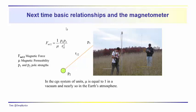And, the next time we're going to talk about some basic relationships. What is the magnetic force. We'll talk a little bit about the proton precession magnetometer. And, we'll also note that the magnetic permeability in the CGS system of units, which is the system of units that we're going to use, is going to be equal to one. Makes things easy, if this is a one, in the vacuum and nearly so in the earth's atmosphere. So, we'll meet with you next time about that. Thanks for joining us.